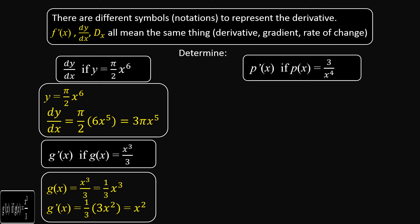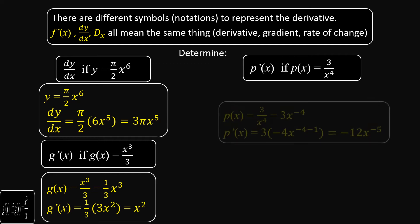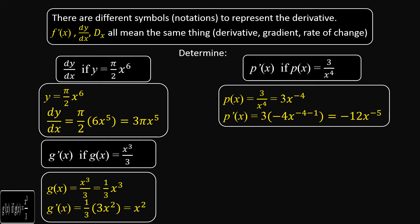Find p'(x), where p(x) = 3/x⁴. It is not easy to find the derivative with x⁴ in the denominator, so we use the exponential law to move it to the numerator, giving 3x⁻⁴. The exponent is now −4. Applying the rule: derivative is 3 times −4 times x to the power −4 minus 1, which is −5. The final answer is −12x⁻⁵.